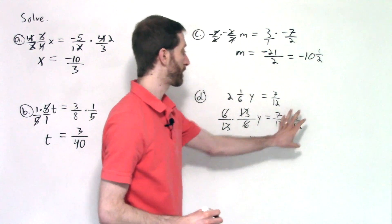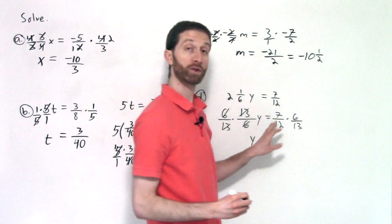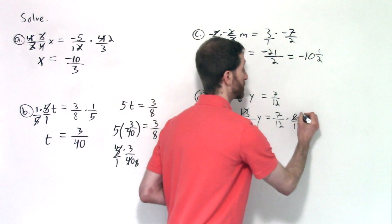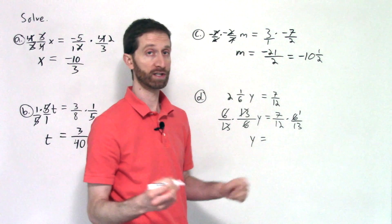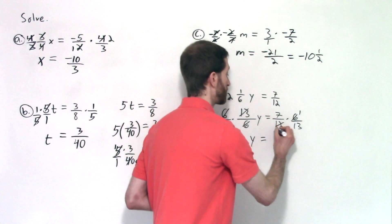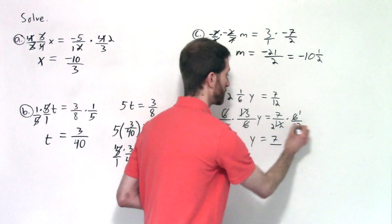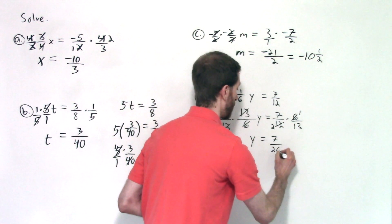Now we'll simplify this piece here. Seven has no common factor with 12 or 13, but six does with 12. Six goes into itself one time, the GCF being six and into 12, two times. Seven times one is seven over two times 13 is 26.